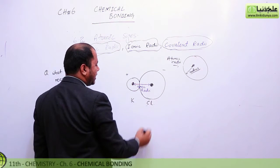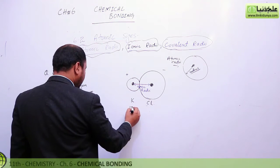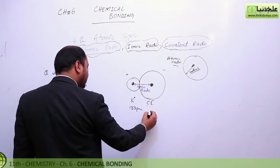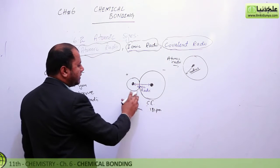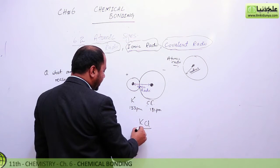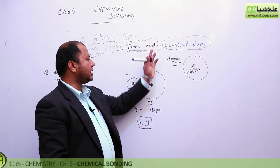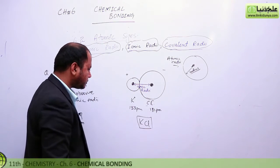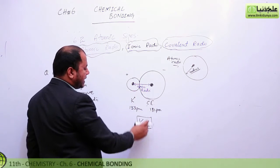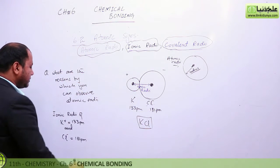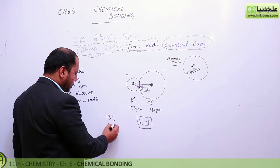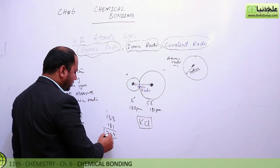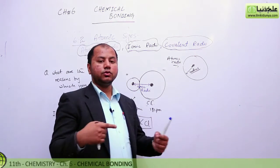Let's say this is potassium and chlorine. The potassium ion size is 133 picometers and the chloride ion size is 181 picometers. These atoms are chemically bonded with an ionic bond, so the distance between the two nuclei gives us the ionic radii. Adding them: 133 + 181 = 314 picometers — that is the distance between the two nuclei of potassium and chloride.